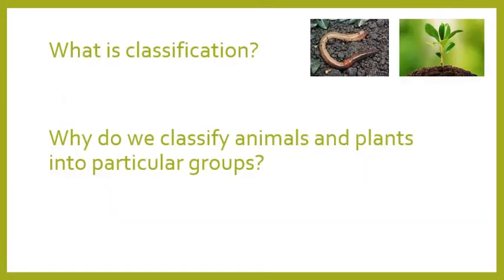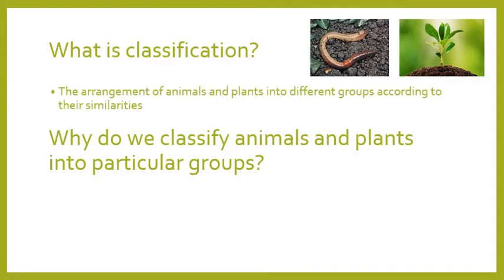First things first, I've got two questions for you. The first is: what is classification? And the second: why do we classify animals and plants into particular groups? Classification is very simply the arrangement of animals and plants into different groups according to their similarities — for example, grouping two animals together because they both grow feathers, or two plants because they both grow on river banks. These are similarities in their characteristics.